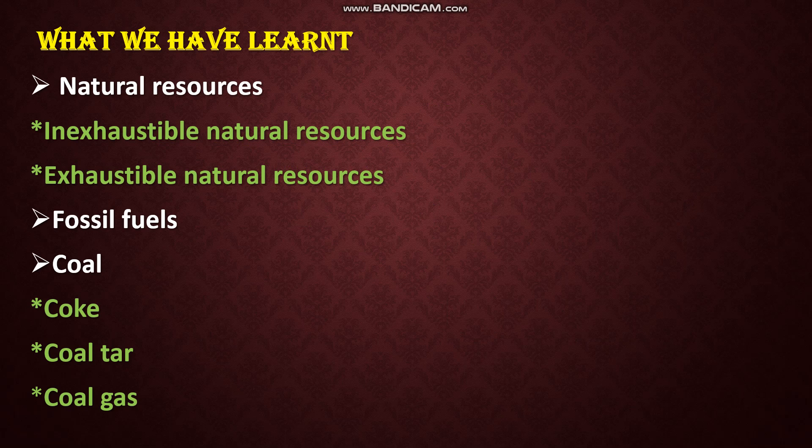What are inexhaustible natural resources? The resources which are present in nature in unlimited quantity, and as we use them they do not get over — such resources are called inexhaustible natural resources. Examples we learned are sunlight and air. What is meant by exhaustible natural resources? The resources which are present in limited quantity in nature and on human activities will get exhausted — they are called exhaustible natural resources.